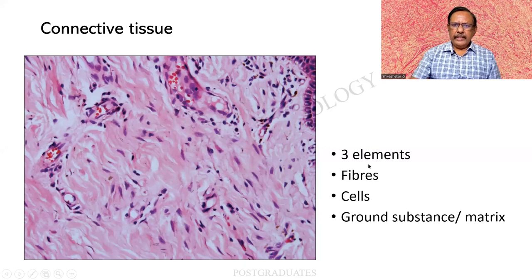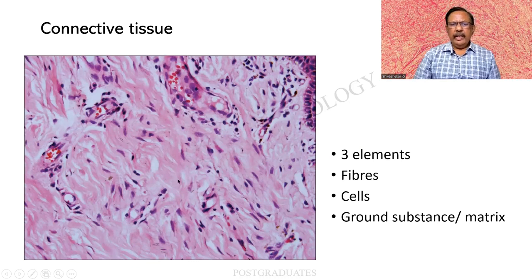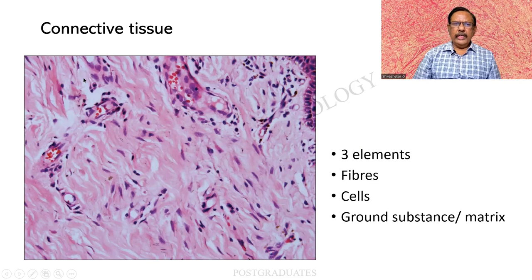There are basically three elements. One will be the fibre, two the cells, and three the ground substance or matrix. Here I am able to see delicate spindle-shaped cells which are nothing but the fibroblast. Also there are some broad ribbon-like pale structures which are the collagen fibres, and a supporting material which is the ground substance or matrix.